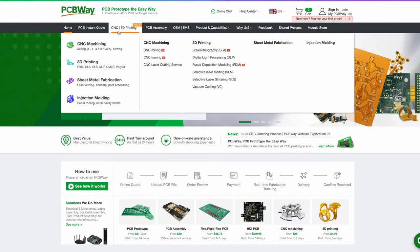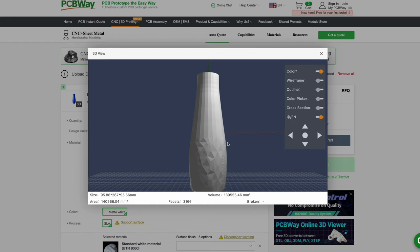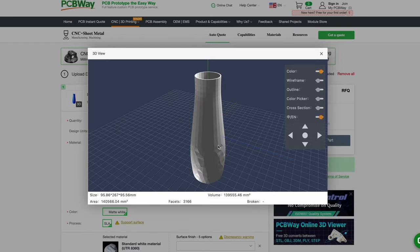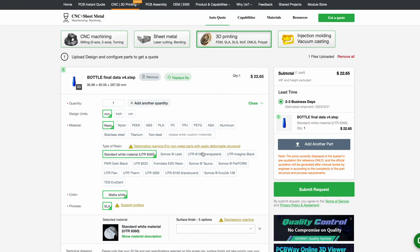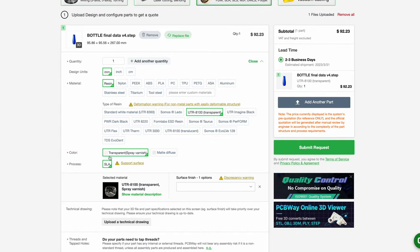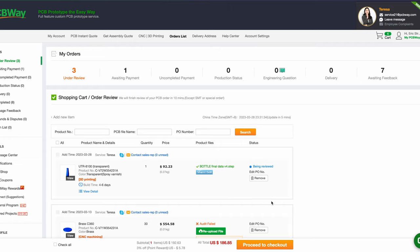The first thing I do for a 3D printed part like this is go to PCBWay.com. Select 3D printing, upload the step file, review the file, select the type of 3D printing I want, the quantity. I select the material that I want to have it printed in. And in this case, I have them clear coat the outside. I submit it, it gets reviewed by an engineer, and we're done.